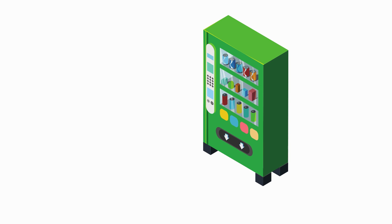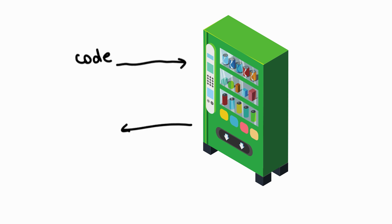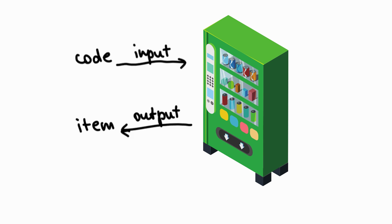For example, if you think of a vending machine, you input the code — that code is unique to the item that you want the machine to produce. Then the machine reads the code, recognizes that that code relates to only that one specific item, and it produces the item for you. So the code is the input, or your independent variable of a function, and the item is the output or the dependent variable of the function.